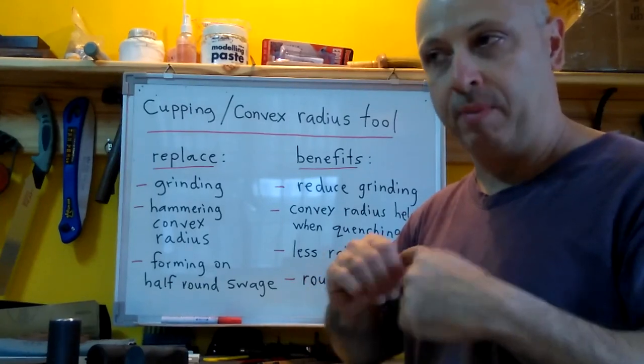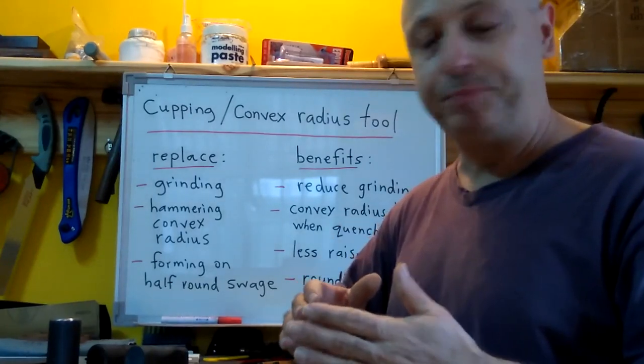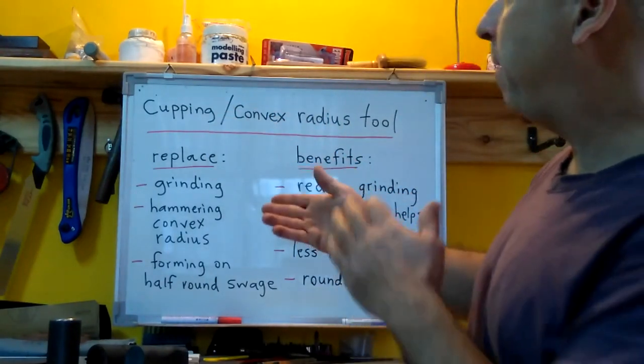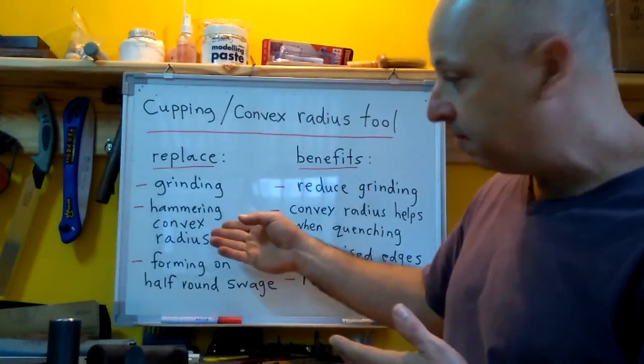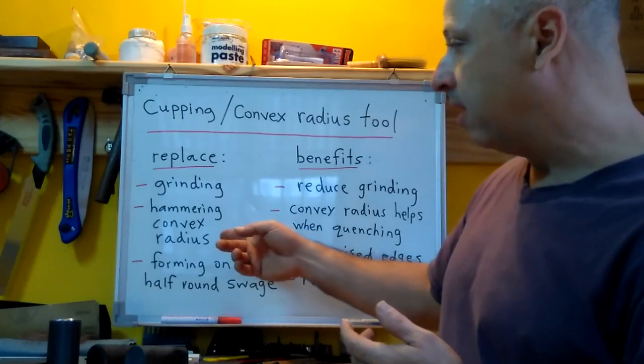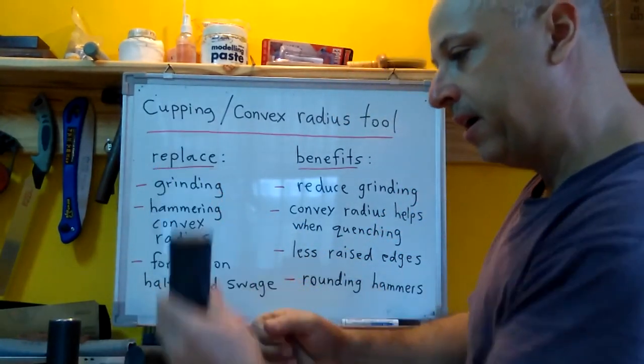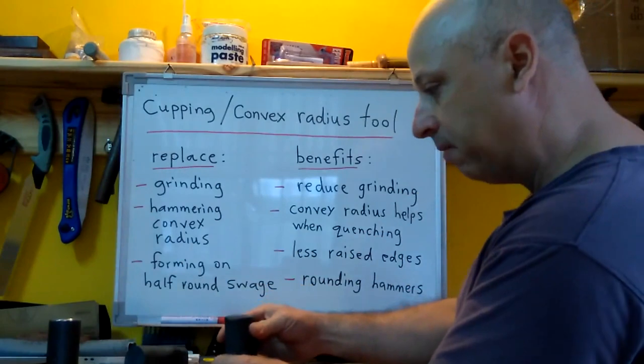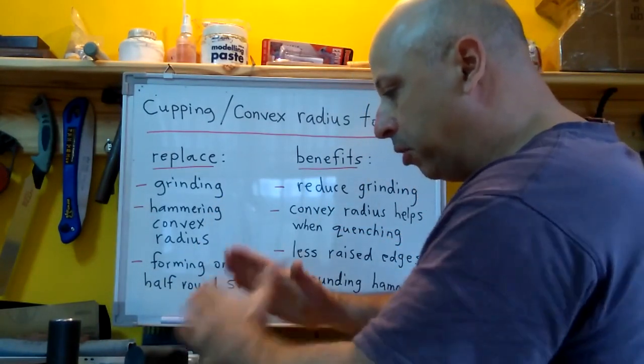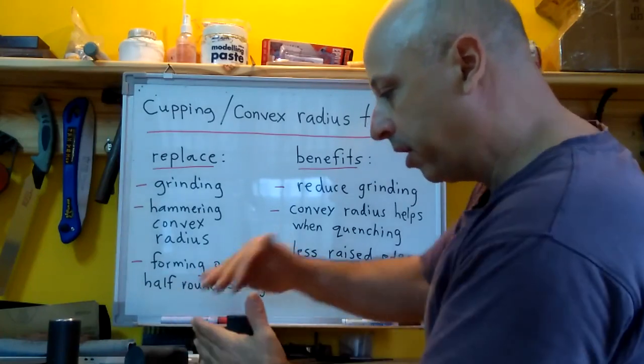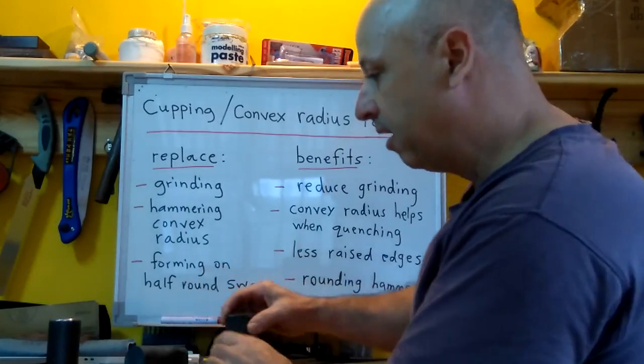So basically what I want to do by making this tool is to replace grinding and hammering the convex radius like I said, when I turn upright, I'm holding it like this on the anvil face and then hammering around it like such and then pushing down the edges working towards the middle as much as I can.